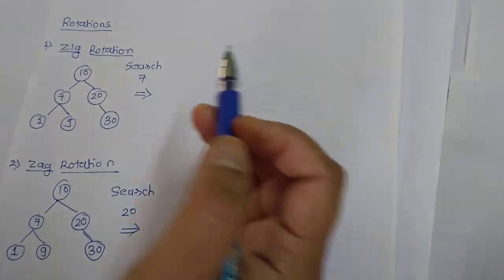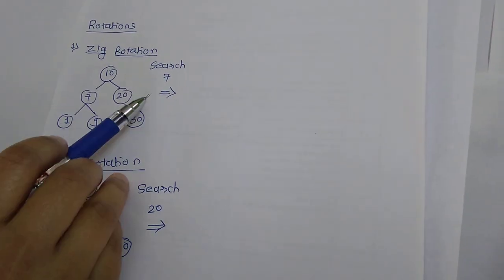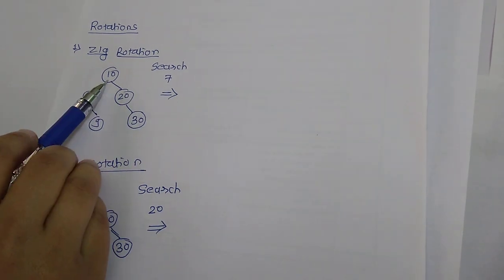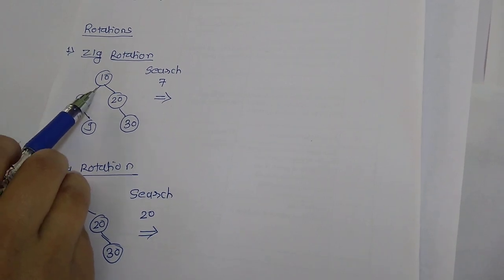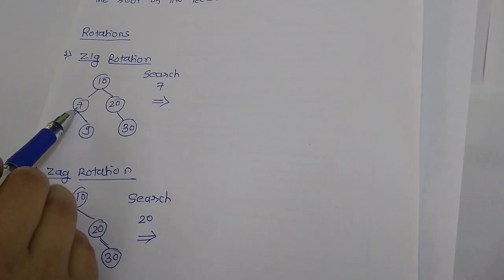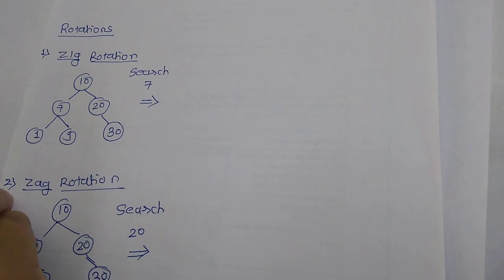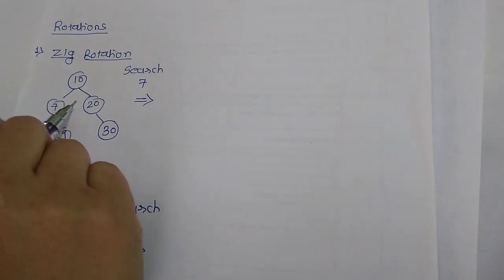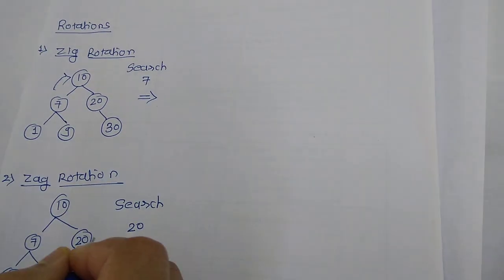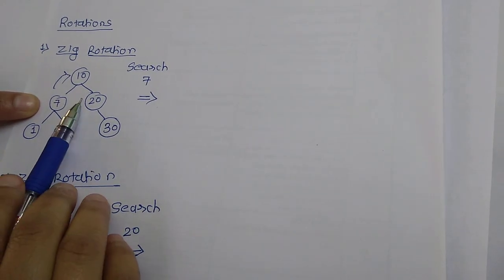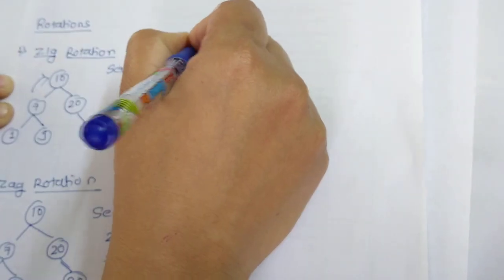First is the zig rotation. I will perform the search operation here — search 7. Applying BST rules, 7 is less than root, which is 10. So 7 will appear in the left subtree of the root. I find the position of 7, and the search operation is completed. But the Splaying operation remains. The root is to the right of 7, so I perform the right operation — that is the zig operation. Zig is also called a right rotation.